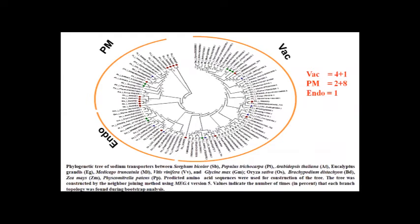We constructed a phylogenetic tree. Based on their localization, sodium transporters are classified into three groups: vacuolar-based, endomembrane-based, and plasma membrane-based. We included sodium transporters from Sorghum bicolor, Populus, Arabidopsis, Brachypodium, Oryza, Glycine max, Vitis vinifera, Physcomitrella, and others, and constructed the tree using IQ-TREE. Most were localized to the plasma membrane — two NHX and eight NHE — four NHX for vacuolar, one NHE vacuolar, and only one from the endomembrane.